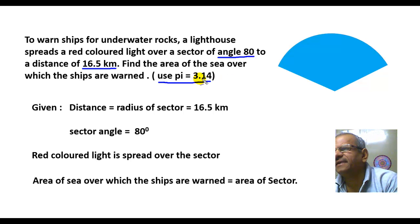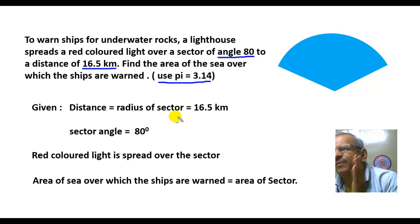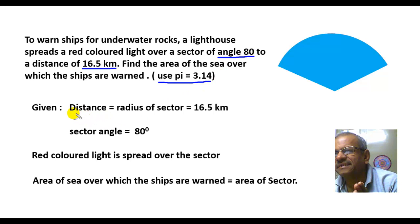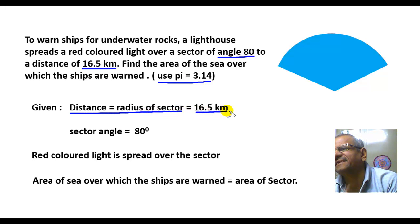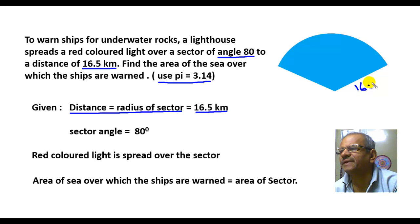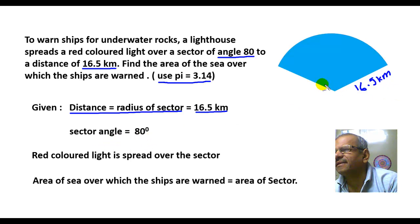The red colored light is spread over a distance of 16.5 kilometers, forming a sector angle of 80 degrees. The distance covered is nothing but the radius of the sector, which is 16.5 kilometers. The sector angle is 80 degrees.